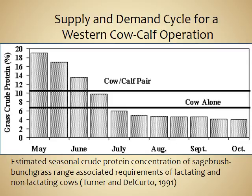In July, the nutrient requirement for the cow alone is less than that of the cow-calf pair. A 1,000 to 1,400-pound cow by herself needs only about 7% crude protein in her diet, and grasses from July through October fall below what she needs. Ultimately, there will be management implications for supplementing on the range — knowing what plants are out there and how to meet the animals' protein and nutrient needs.